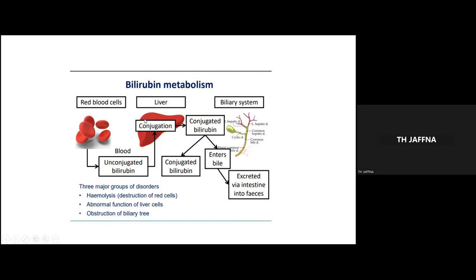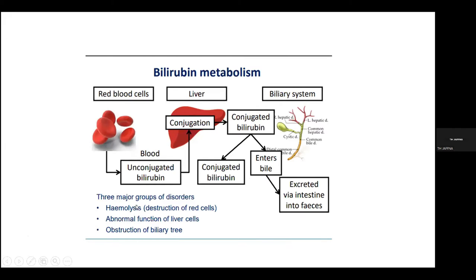Regarding liver bilirubin metabolism and disorders, there are three major groups. One is hemolysis — excessive hemolysis causes increased unconjugated bilirubin in the blood. The second is abnormal liver function, which causes increased conjugated bilirubin in the blood. The third is obstruction of the biliary tree, which also causes increased conjugated bilirubin in the blood.